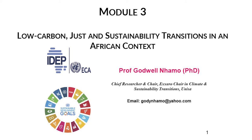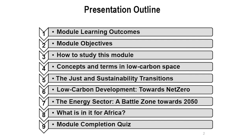As for our module outline, we will cover the module learning outcomes, module objectives, concepts and terms in low carbon space, the just and sustainability transitions, and low carbon development with a focus towards net zero. The energy sector is a battlefield towards net zero. The last section will cover what is in it for Africa. When you have completed your module, you will be able to undertake the usual quiz, where you will be given three chances to answer 10 multiple choice questions loaded on your platform.